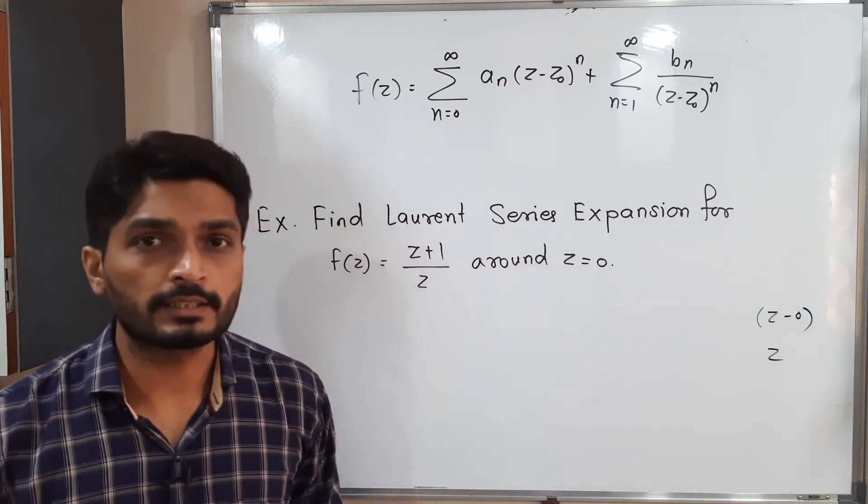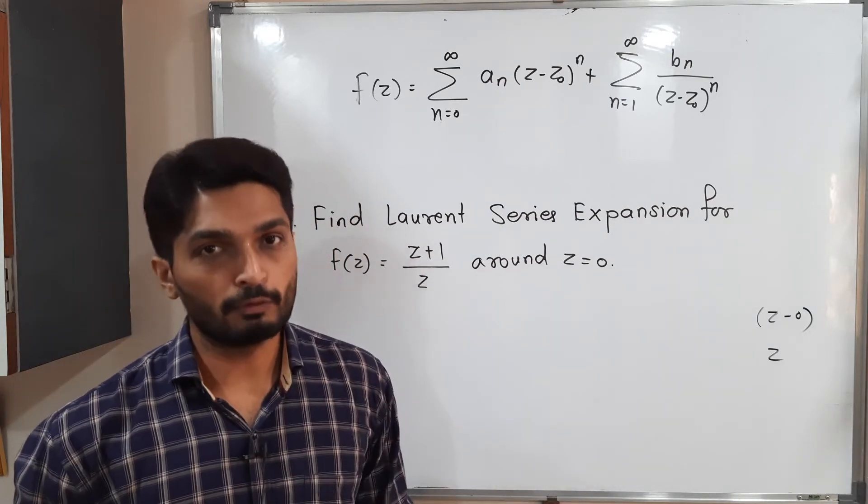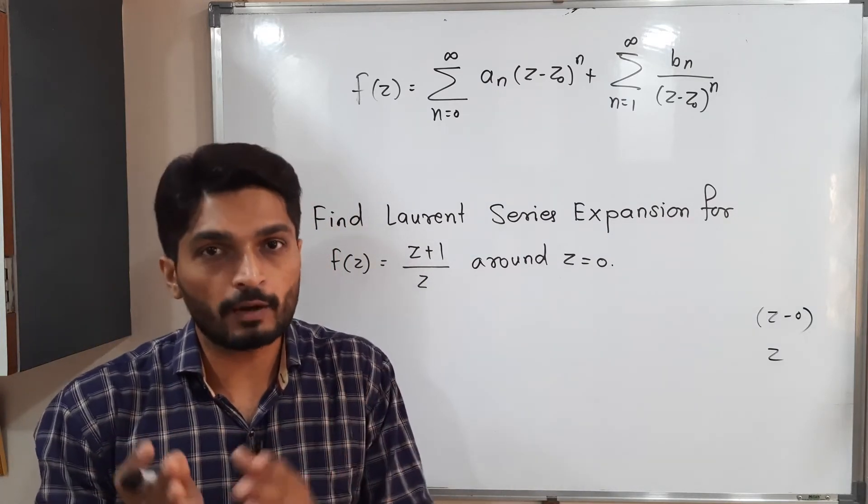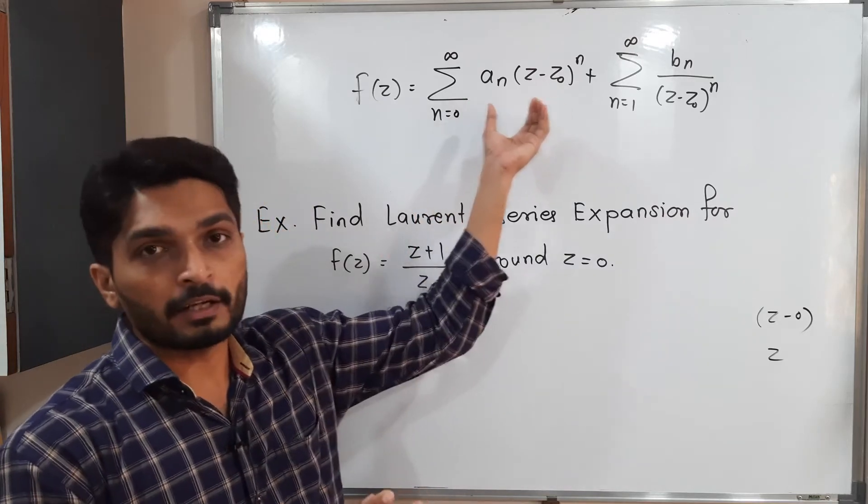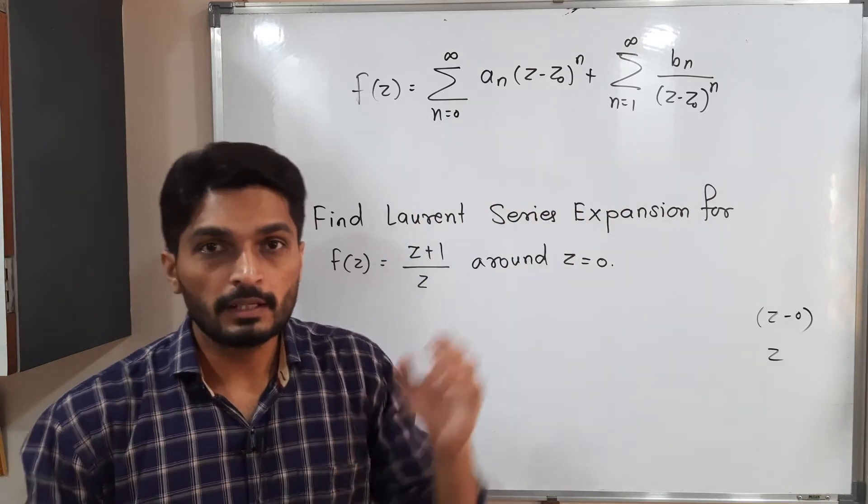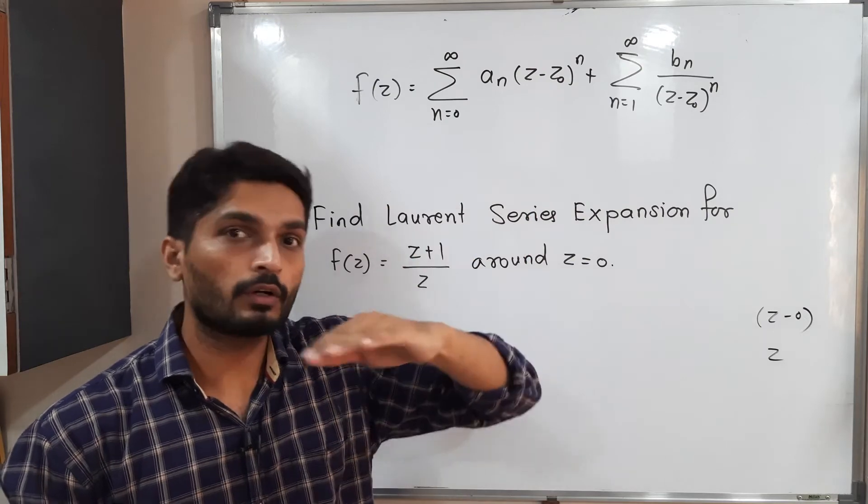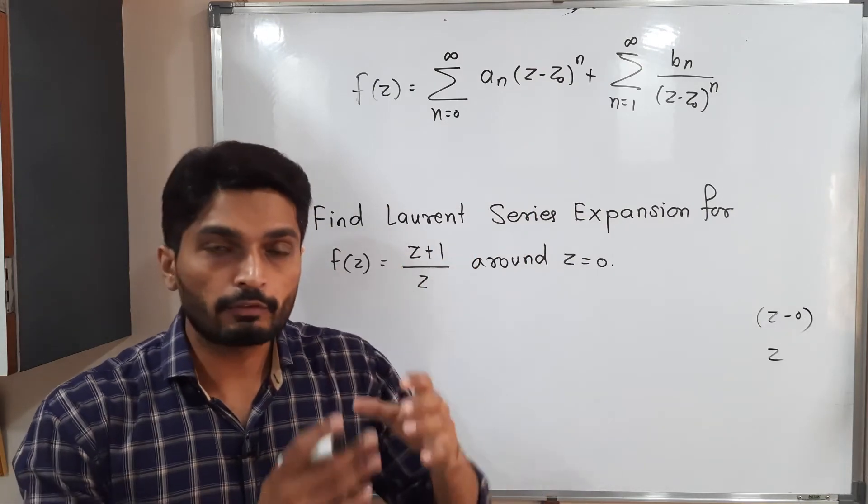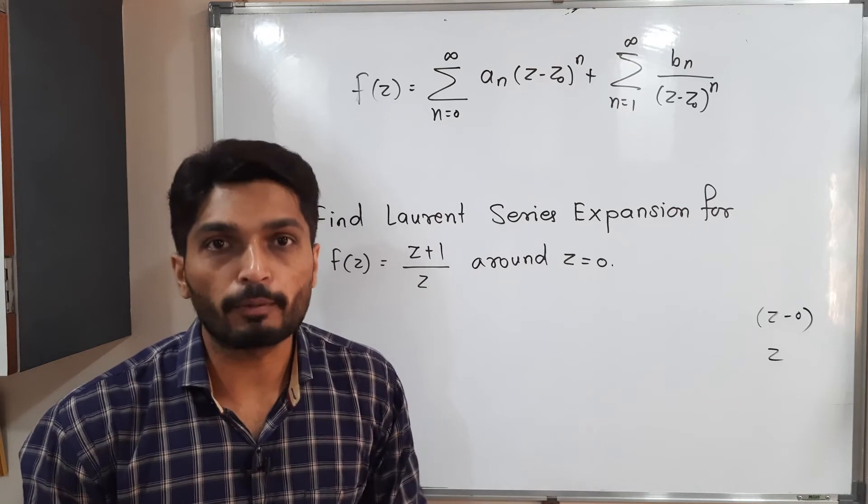That means in our Laurent series, only z will be involved and it should have some analytic part and some principal part. We need to have some part where terms of z will be at numerator and there will be some terms where z will be at denominator.